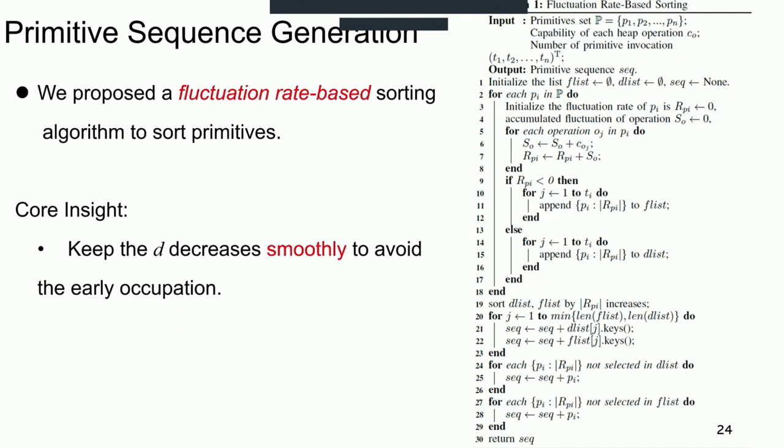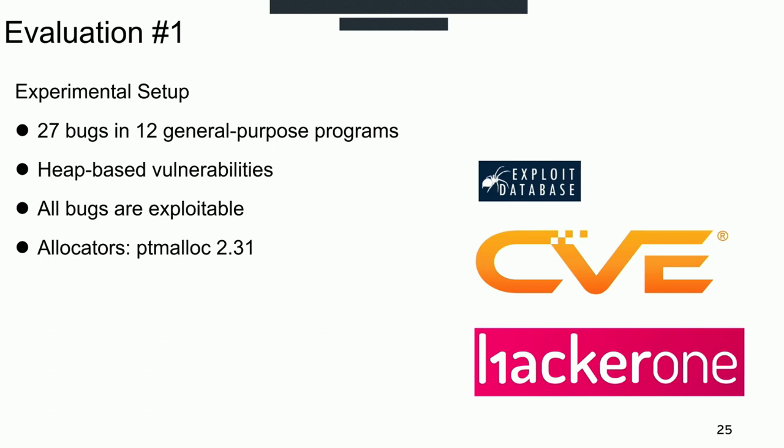To evaluate our project, we set up experiments with the following settings. We collect 27 bugs of 12 general-purpose programs from public websites, and all bugs are heap-based vulnerabilities which could be reproduced and exploitable. The allocator is ptmalloc, which is widely used in Unix platform.